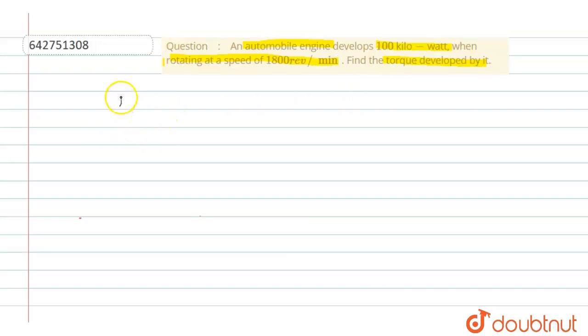So firstly, what are the given terms? We have a power which is represented by P, that is equals 100 kilowatt. And we also have a speed, and this is a circular motion, so this is our angular speed. We can write here angular speed which is represented by omega, that is 1800 revolution per minute.